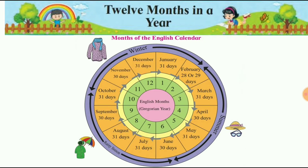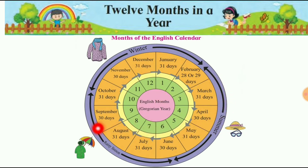How many seasons are in the English calendar? The answers are three seasons: winter season, summer season, and rainy season.